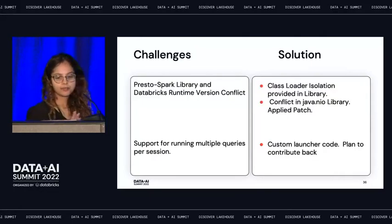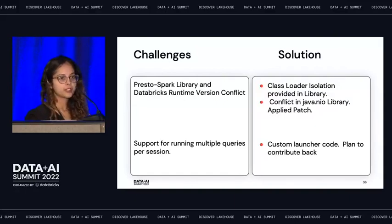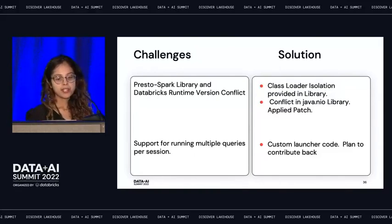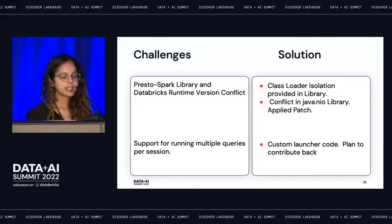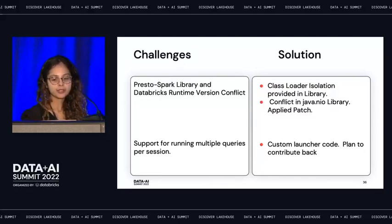The next four or five slides talk about challenges we ran into. We took the open source Presto on Spark library and converted it into a product used within Intuit at scale. The first challenge was that the Presto on Spark library and Databricks runtime have version conflicts. The Presto team has managed this well with class loader isolation, but we still ran into conflicts in Java IO libraries. We applied a patch and plan to contribute it back.